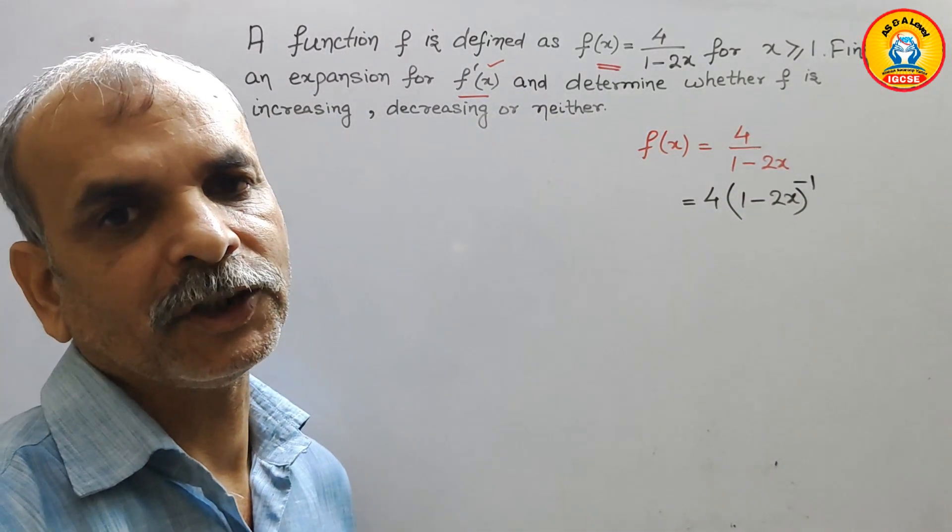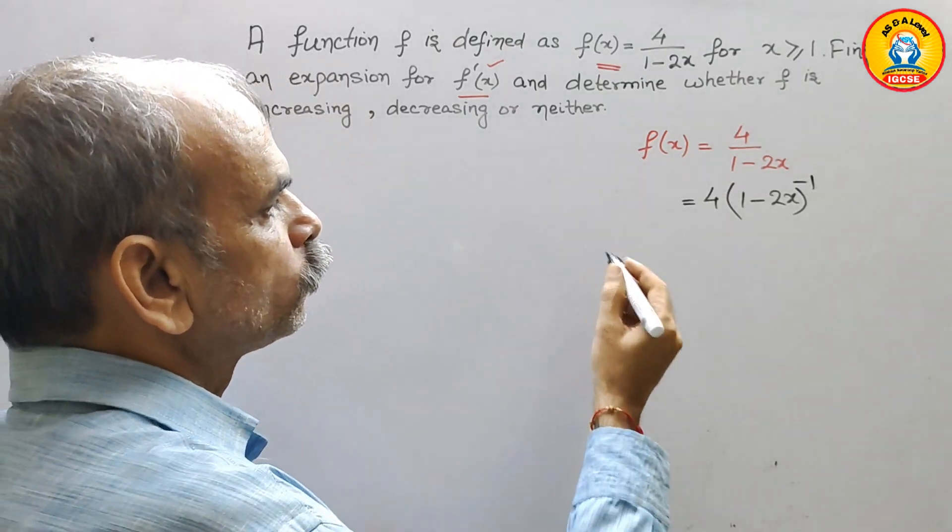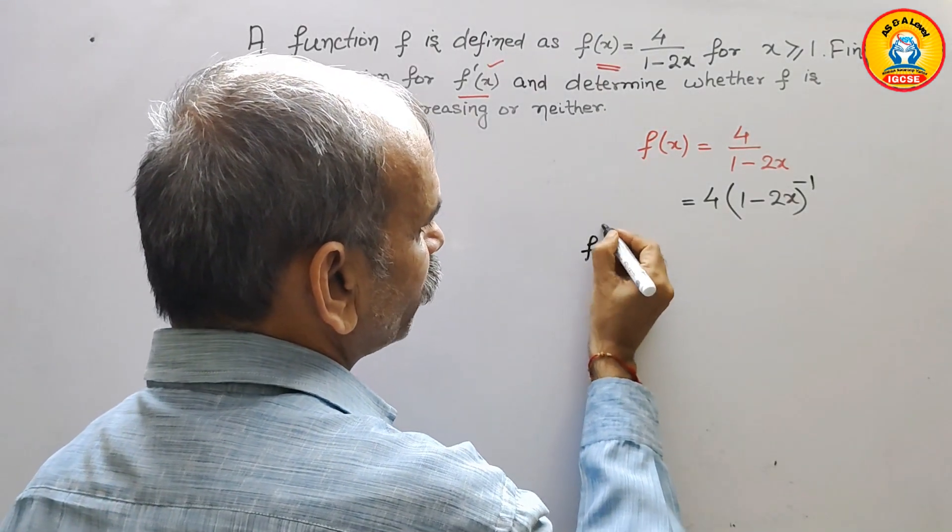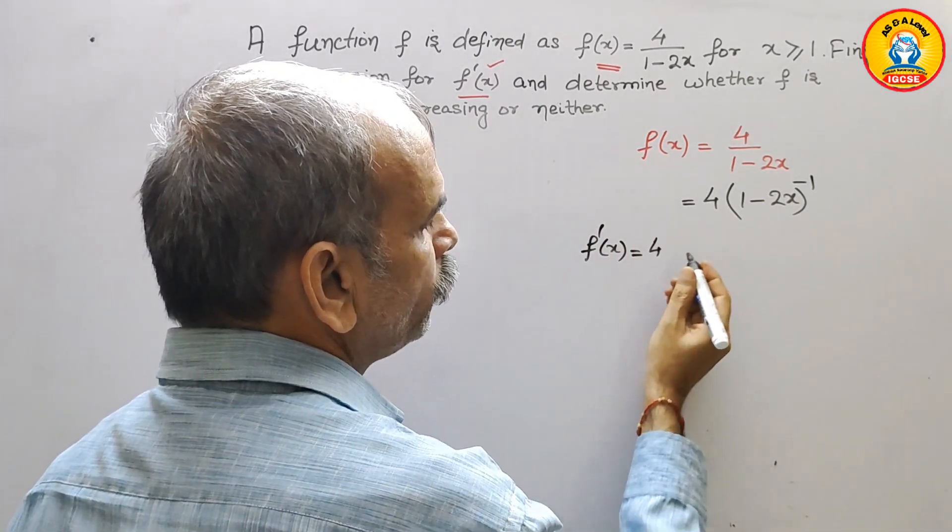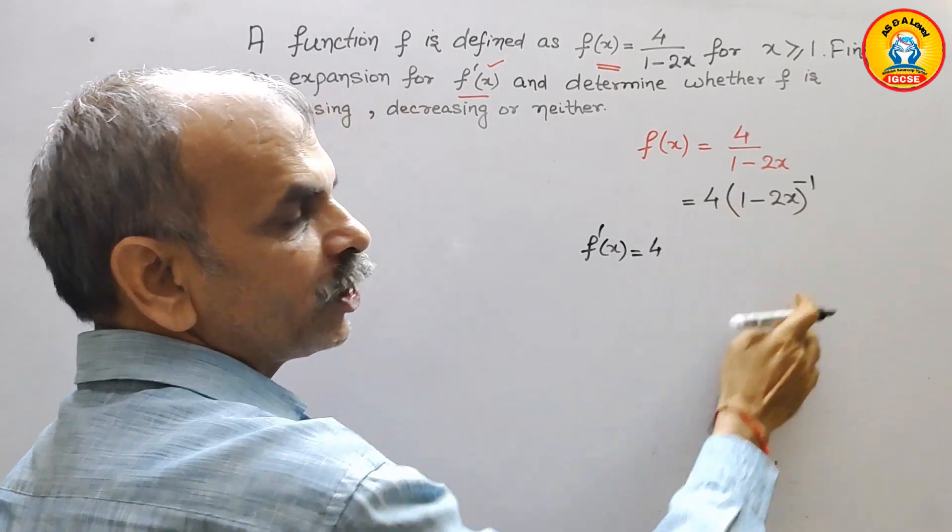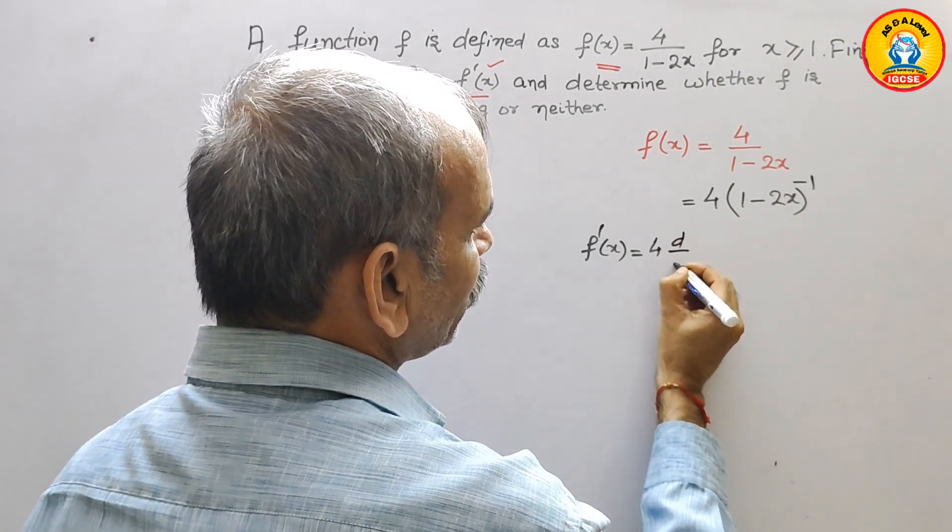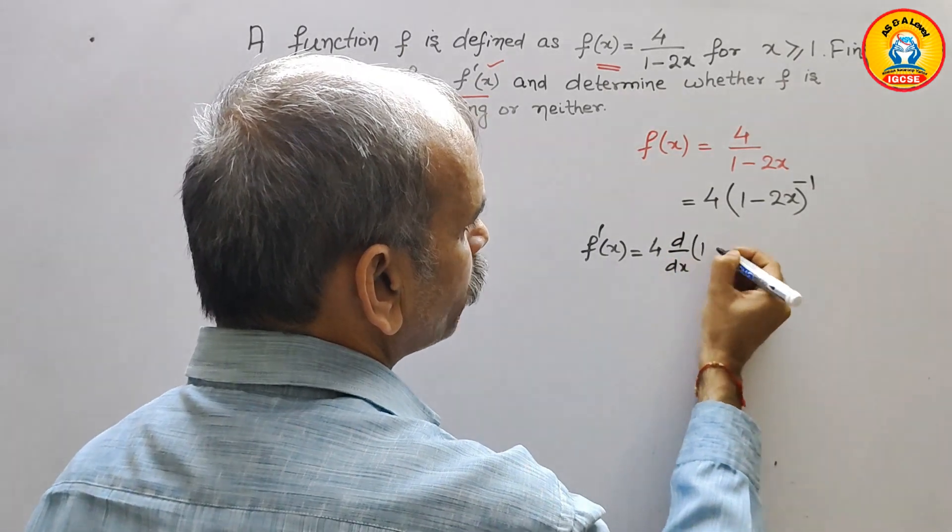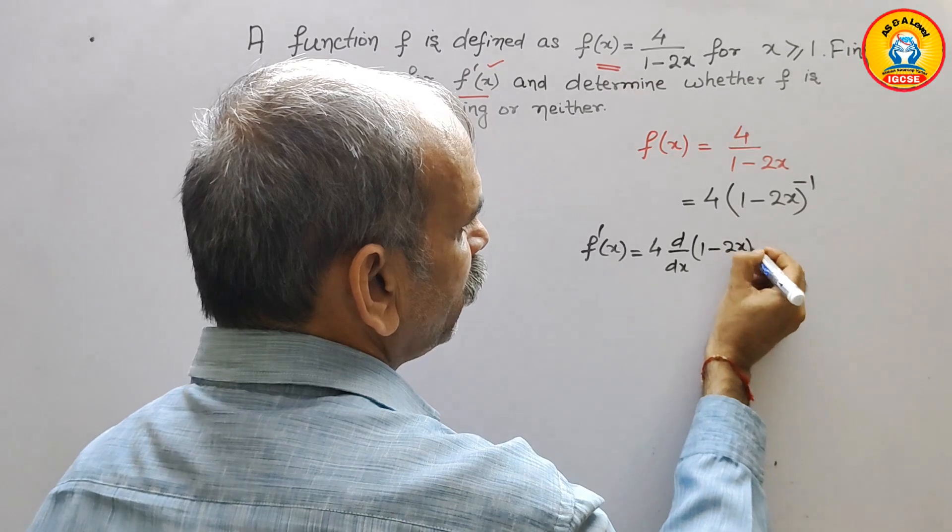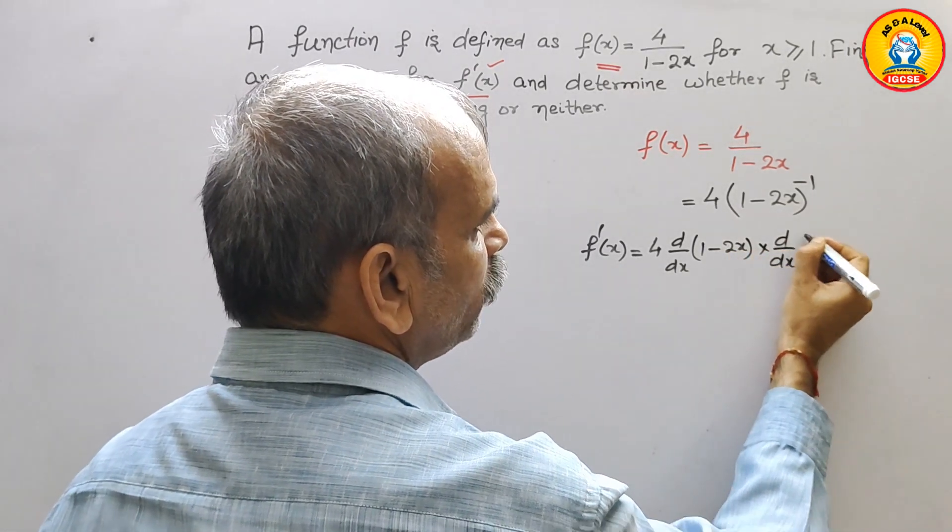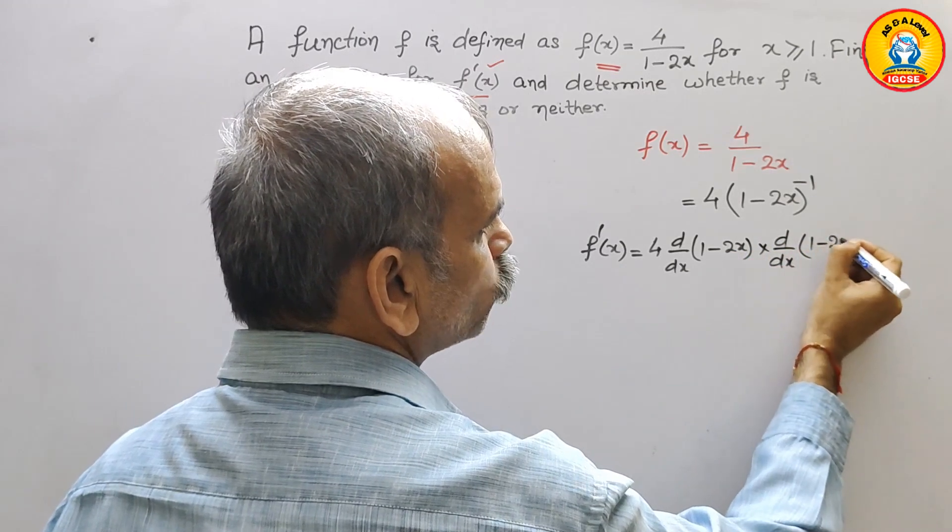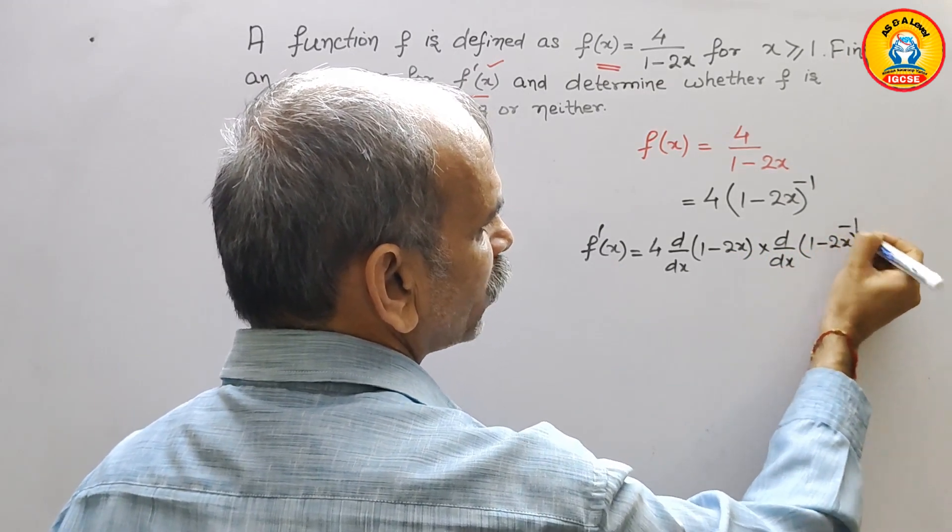So here it will come as 4 into (1 minus 2x) power minus 1. Now we will go for differentiation of that. So here it will come as f'(x) equals 4 and this we will go for a chain rule. d/dx of (1 minus 2x) power minus 1.